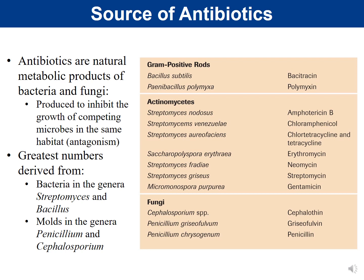The greatest numbers of antibiotics are derived from bacteria in the genera Streptomyces and Bacillus, or molds in the genera Penicillium and Cephalosporium. Looking at the table — which you don't need to memorize — Bacillus subtilis, which we've worked with in lab, produces bacitracin. We also have polymyxin. Streptomyces is a filamentous, fungi-like bacterium from which many drugs are derived.